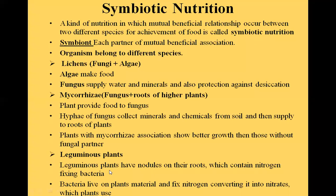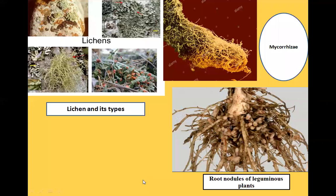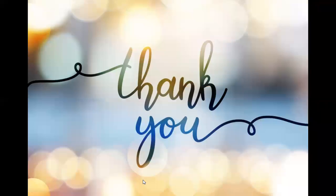So, legume plants have nodules on their roots which contain nitrogen-fixing bacteria. The bacteria live on the plant's materials and fix nitrogen, converting it into nitrite and nitrate, which the plants then use. This is an example of a special type of nutrition.